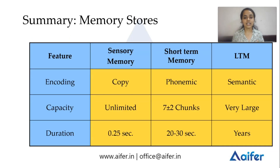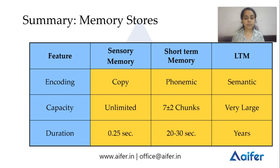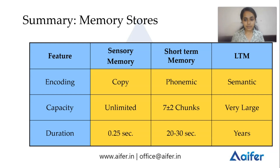To summarize the comparison table: sensory memory encoding is based on basic physical properties; short-term memory encoding is phonemic — how it sounds or looks; long-term memory encoding is semantic, on the basis of meaning and association. Capacity: sensory memory is large or unlimited; short-term memory is 7 plus or minus 2; long-term memory is practically unlimited.